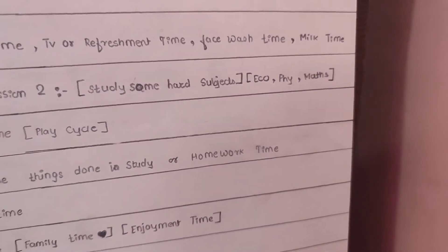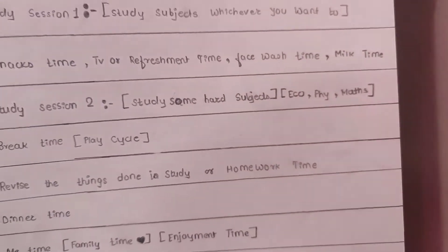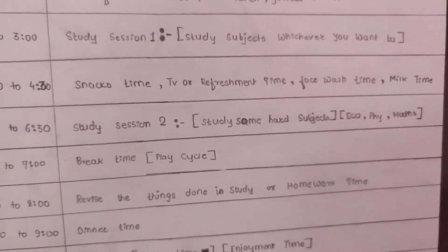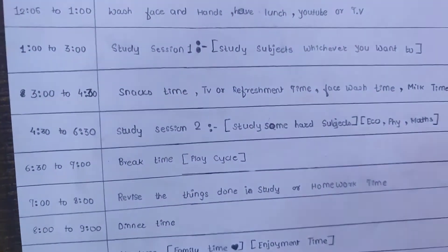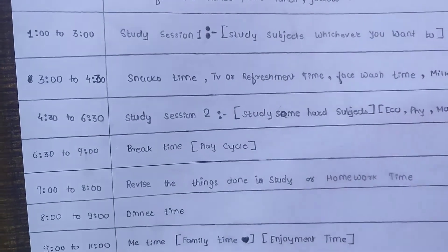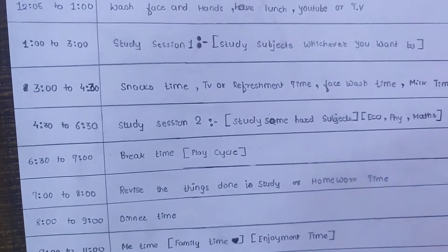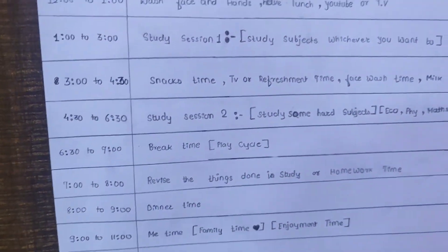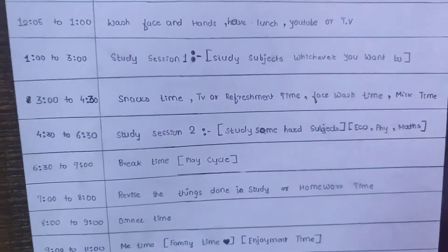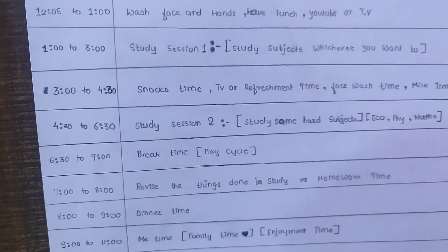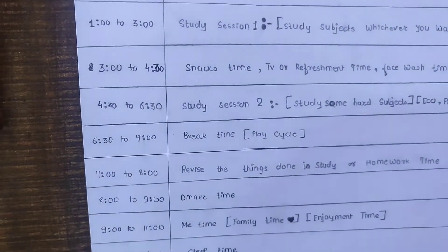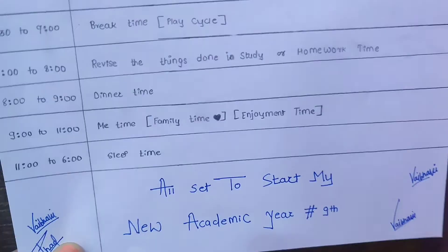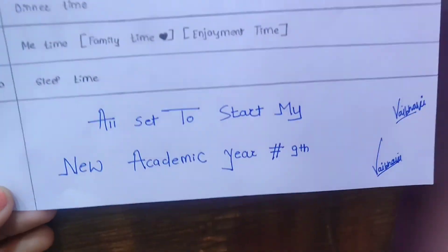8:00pm to 9:00pm will be my dinner time. After that, 9:00pm to 11:00pm will be me time, family time or enjoyment time. And after that, finally, it will be sleep time from 11:00pm to 6:00am.